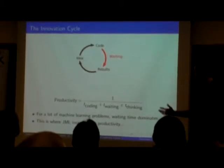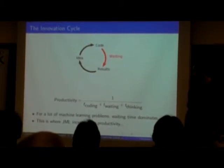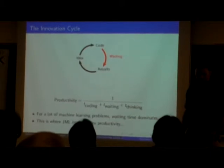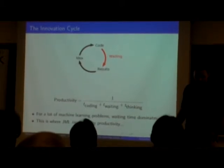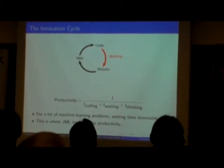And my productivity there, it's a bit of a generalization, but it depends really on the amount of time I spend coding, the amount of time I spend waiting for results, and the amount of time I spend thinking. For a lot of machine learning problems, the waiting time absolutely dominates. So that's really what you want to reduce to improve your productivity. And this is where JML increases my productivity.